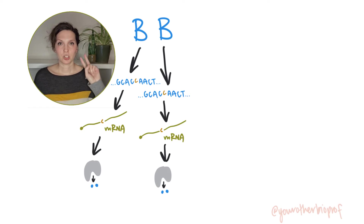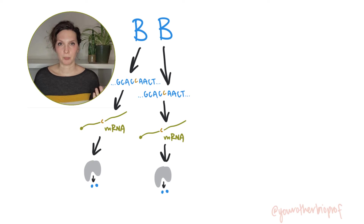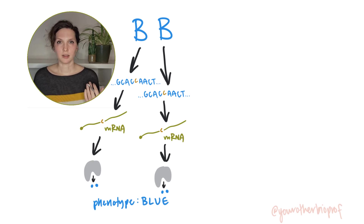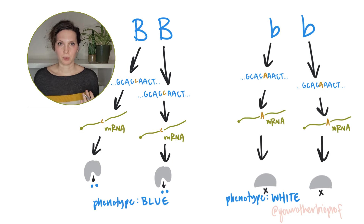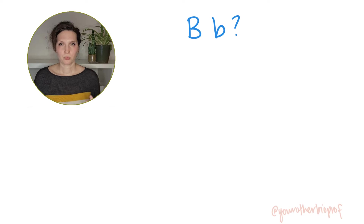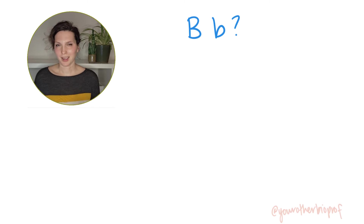In the big B big B genotype, we've got two alleles that lead to pigment production. In the little b little b genotype, we've got two alleles that don't. What about the heterozygote — what happens when we have a big B and a little b allele?